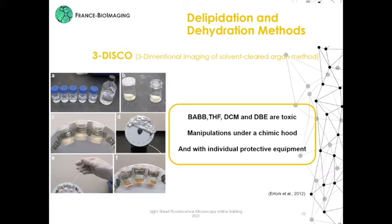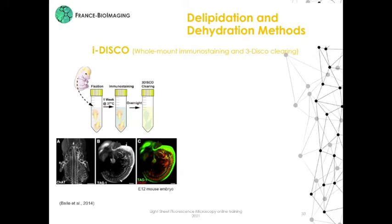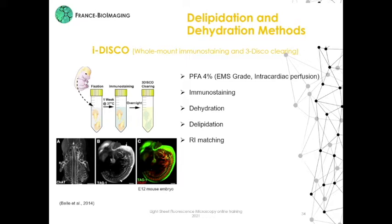In the DISCO methods we have the iDISCO. This technique was developed by Bel and collaborators on mouse embryo. They include, between the fixation and the dehydration step, a step of immunostaining, because the DISCO protocols do not preserve the endogenous fluorescence of proteins.